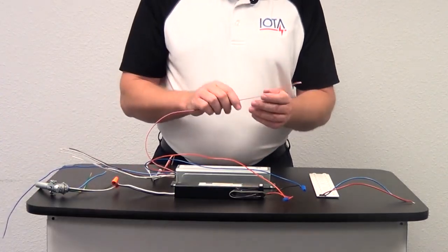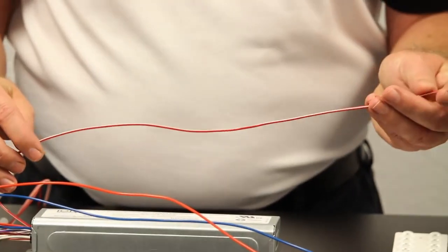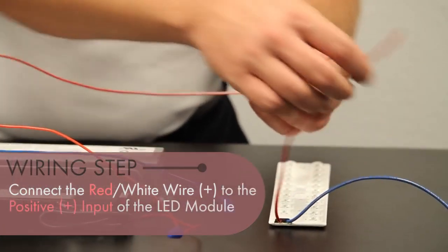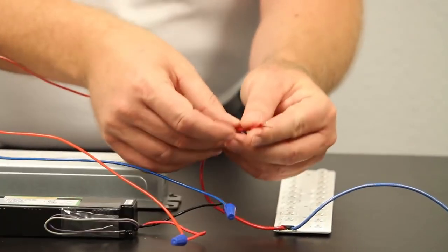First, we take the red wire with the white stripe. This is the positive connection, and we're going to connect it to the positive connection of the LED module. In this case, the wire is red.